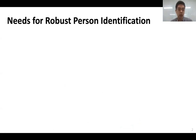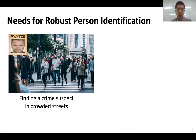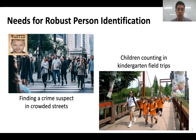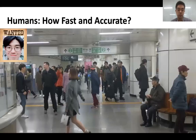In our everyday lives, there are many cases where we need to find a target person in crowded spaces. A police officer chasing a crime suspect is one example. A kindergarten instructor monitoring a group of children on a field trip is another one. So how good are we at finding a target person in crowded scenes? For example, take a look at the picture we have taken in a crowded subway station. Can you try identifying where this man on the top left is in the scene?